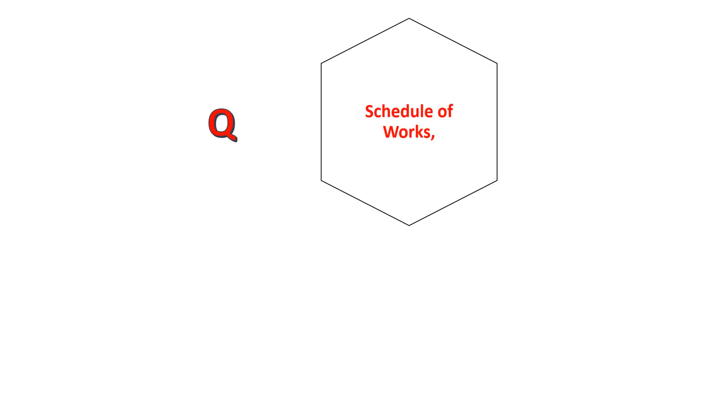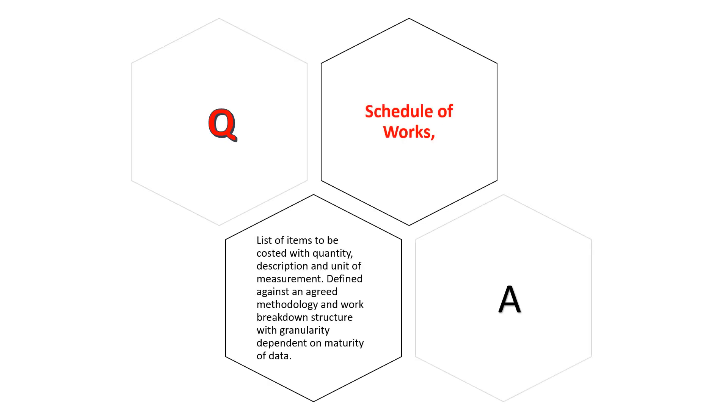Schedule of works: List of items to be costed with quantity, description, and unit of measurement. Defined against an agreed methodology and work breakdown structure with granularity dependent on maturity of data.